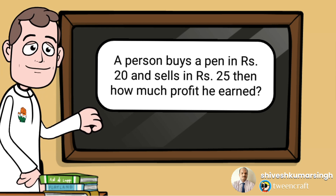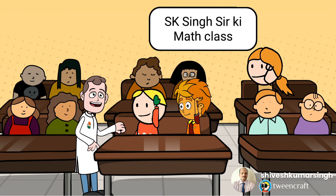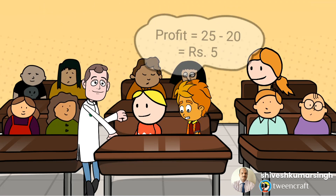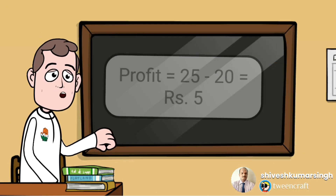Let's consider one example. If a person buys a pen for rupees 20 and sells it for rupees 25, how much profit did he earn? Sir, he buys at rupees 20, so this is the cost price, and he sells at rupees 25, so this is the sale price. Since sale price is more than cost price, he will have a profit, and the profit will be 25 minus 20, which is rupees 5. Okay, Ansh, very good. So profit here will be rupees 5.